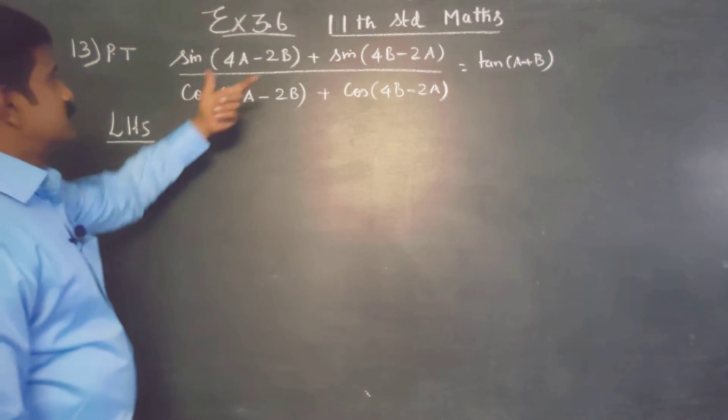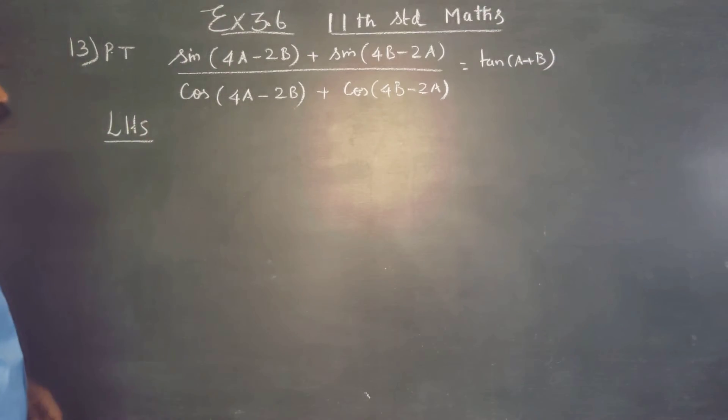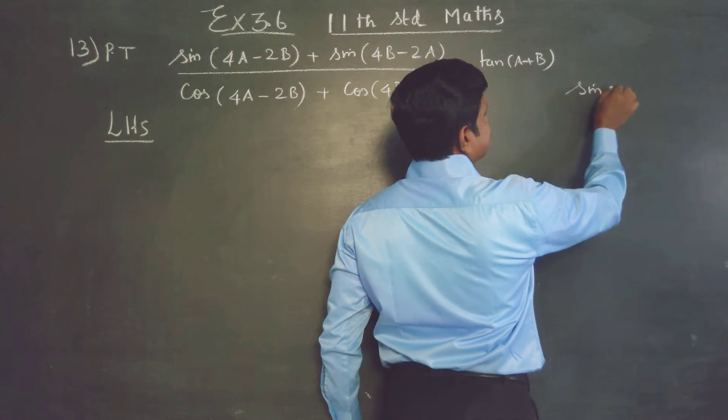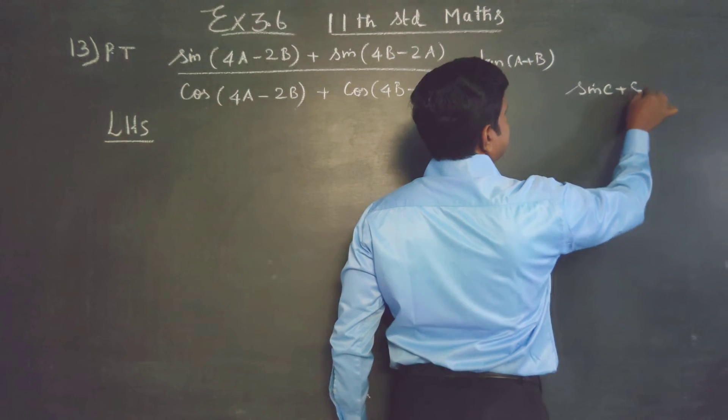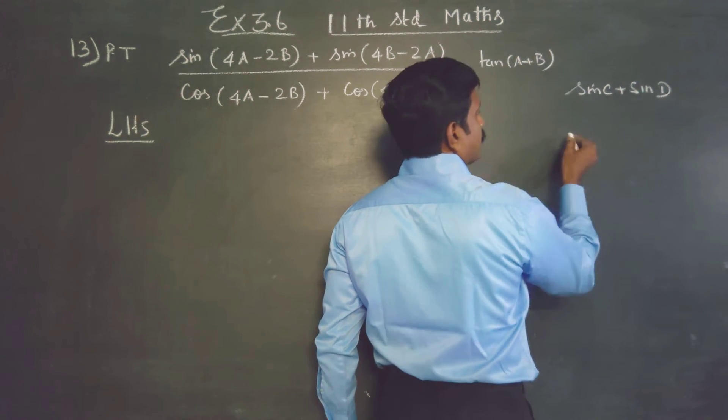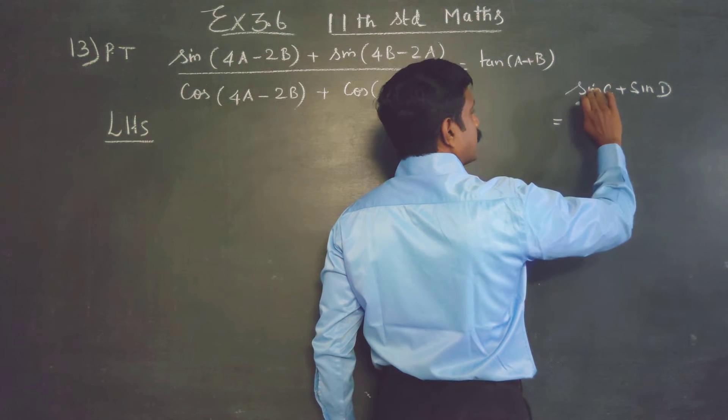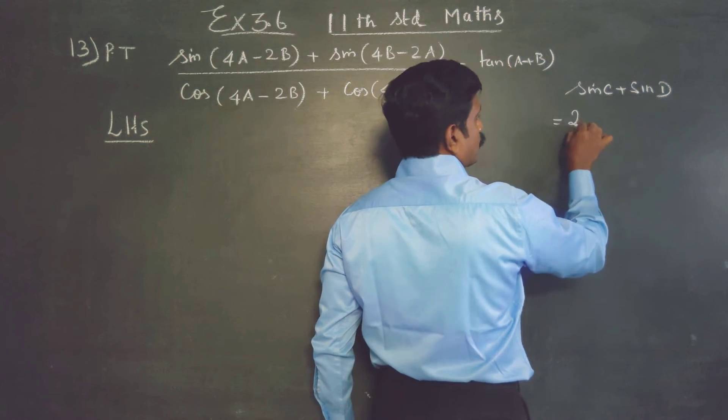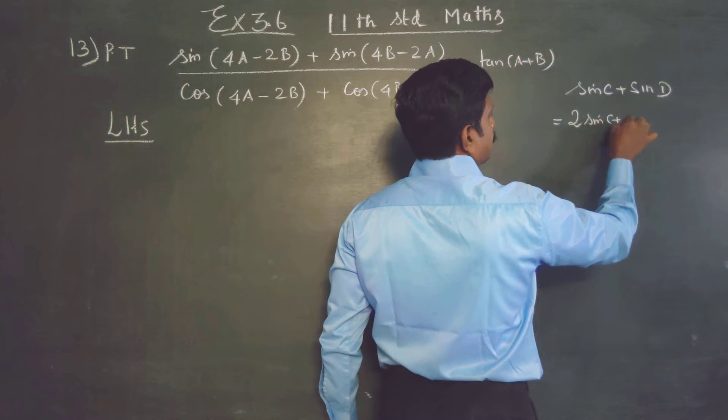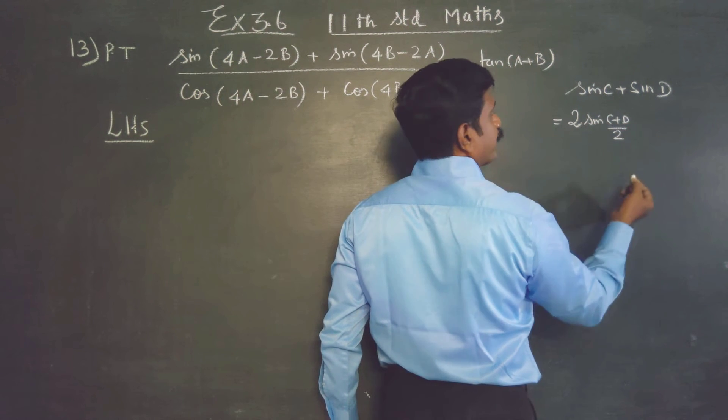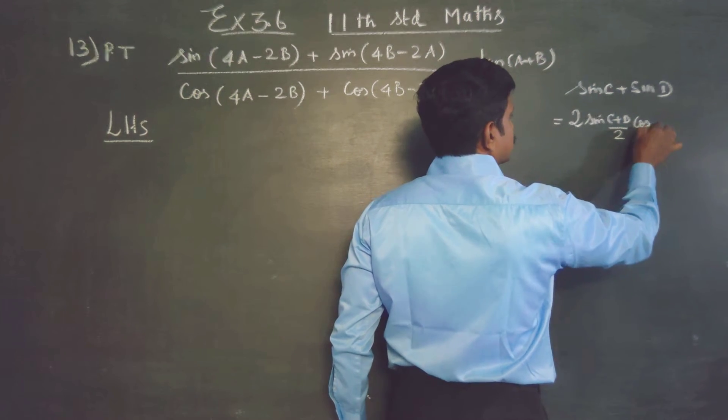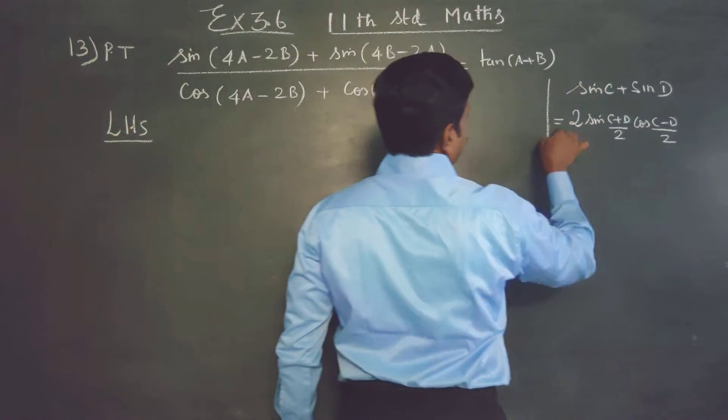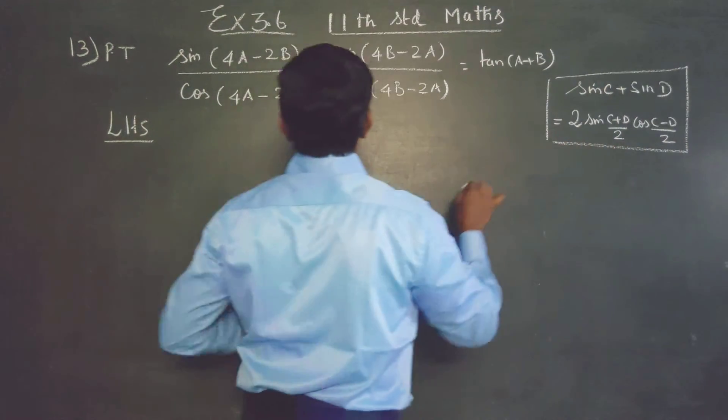This is sinc plus sind. You must know the formula for sinc plus sind. Sinc plus sind is a formula. Summation, addition is a product: 2 sinc plus d by 2, cosc minus d by 2. This is the formula first required for the numerator.